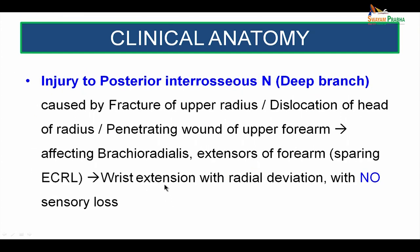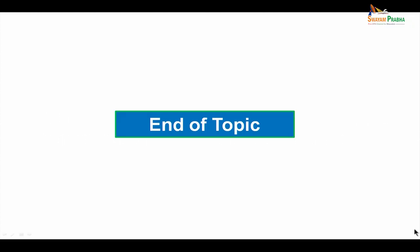Coming on to the posterior interosseous nerve, or the deep branch of the radial nerve, it might be injured due to various conditions like fracture of the upper radius, dislocation of the head of the radius, or penetrating wound of the upper forearm. All this can affect the brachioradialis and extensors of the forearm. Note there may be sparing of extensor carpi radialis longus because the supply happens at a higher level before the nerve enters the forearm, leading to a loss of wrist extension with radial deviation. There is absolutely no sensory loss.